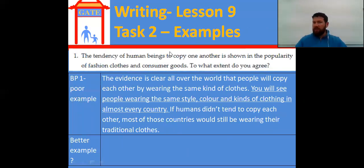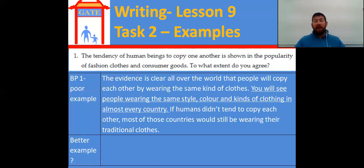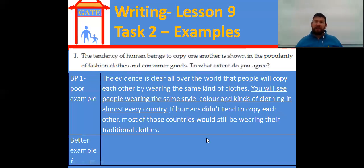So it's two things: humans copy each other and we see this in clothes and consumer goods. I personally can't argue with that — people do copy each other all the time. So my position is yes, I agree. The evidence is clear all over the world that people will copy each other by wearing the same kind of clothes. The example given is: 'You will see people wearing the same style, color, and kinds of clothing in almost every country.' It's not a proper specific example. We have countries and clothing there, so it wouldn't be too hard to be more specific. Think about what you could put in for your example — pause, write, and come back.